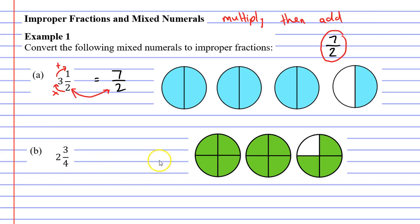Now if I was to convert this to an improper fraction my denominator would have to be 4 because each circle was cut into four pieces.